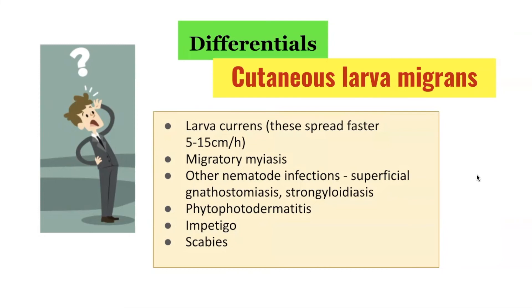Unlike cutaneous larva migrans, these human forms of intestinal hookworms can progress to systemic manifestations including anaemia, malnutrition, and pulmonary and gastrointestinal symptoms. In the human species, auto-infection from larvae in the faeces can occur, sometimes years after the initial infection.